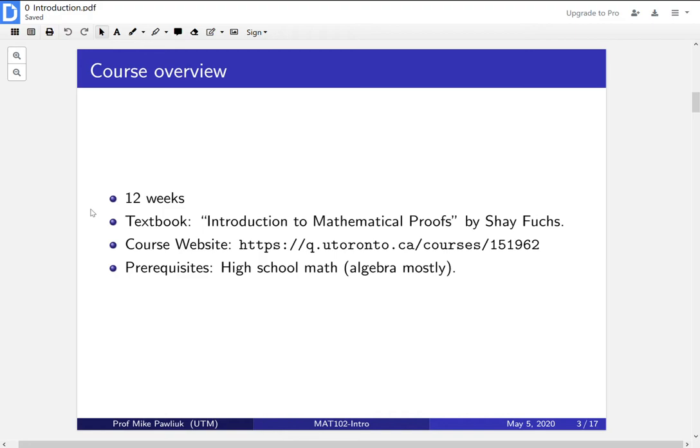An overview of this course is that this course should take about 12 weeks to complete. The textbook that we are using in Math 102 is An Introduction to Mathematical Proofs by Professor Shai Fuchs. And our course website is this Quercus course, which you can read the URL right here if you want. All of the documents for this course will be posted there and they will be publicly available.